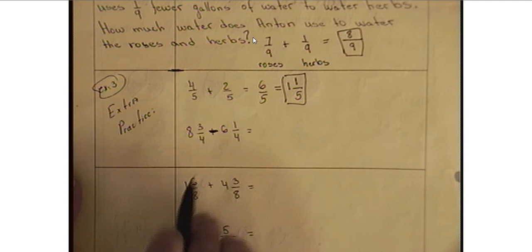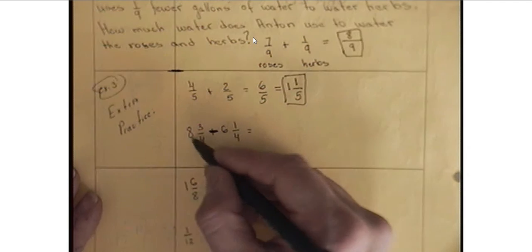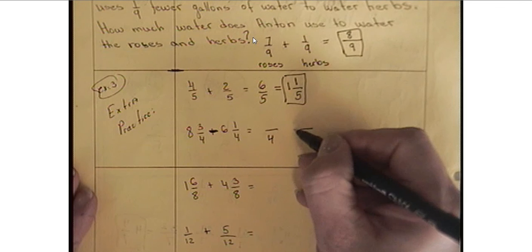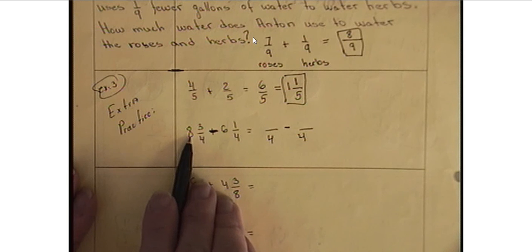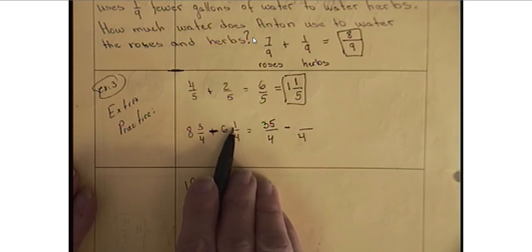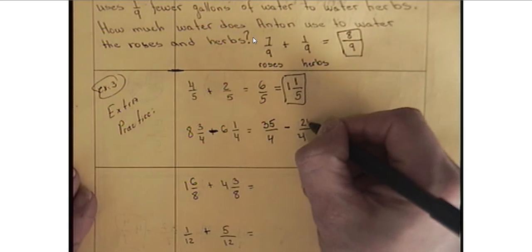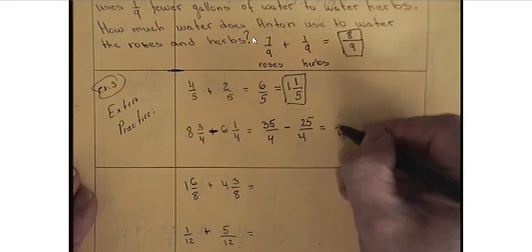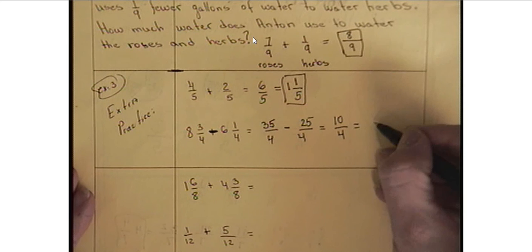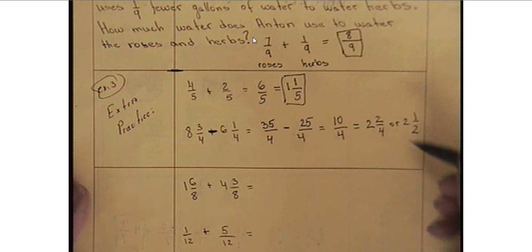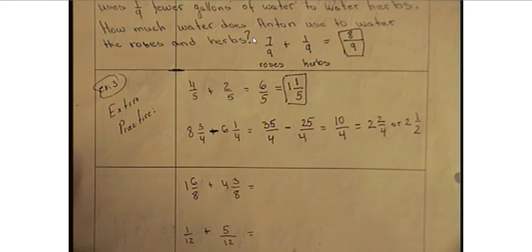Right here we have a subtraction. So 8 times 4, again, we need to convert both of those mixed numbers to improper fractions. 4 times 8 is 32 plus 3 will give us 35. 6 times 4 is 24 plus 1 will give us 25. So 4 is the common denominator. 35 minus 25 is 10. And this will be reduced to 2 and 2/4 or 2 and 1/2. So 2 and 2/4 will be the mixed number of this improper fraction.